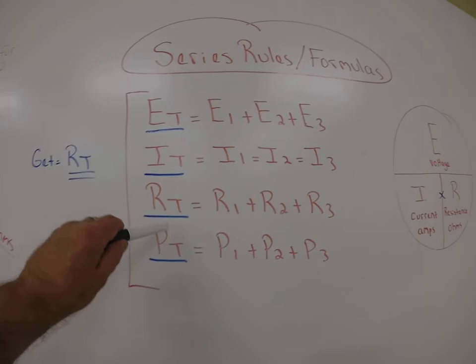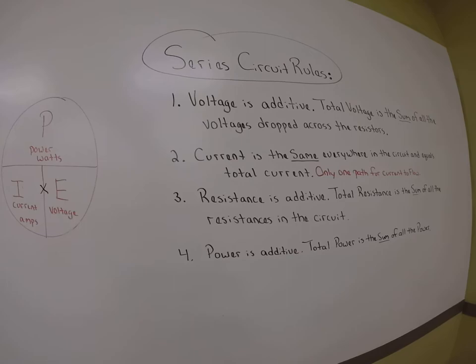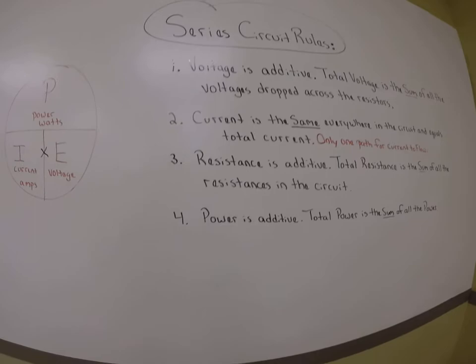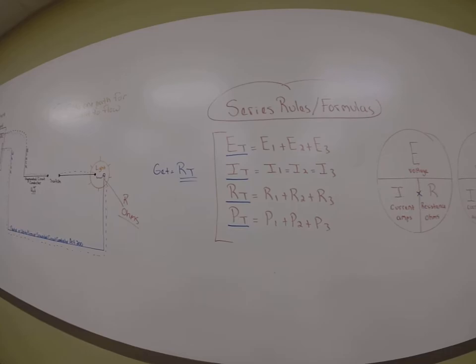Last, total resistance is additive. Resistor one plus resistor two plus resistor three should equal RT. Written: resistance is additive, total resistance is the sum of all the resistances in the circuit. And power in this equation also is additive — total power is the sum of all the power in this circuit. This will change in the future in theory two.